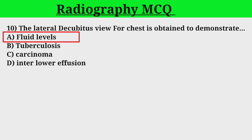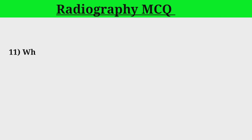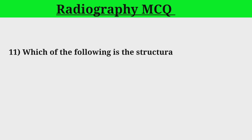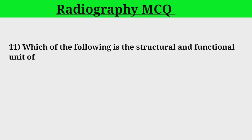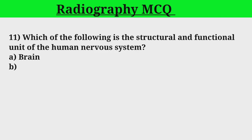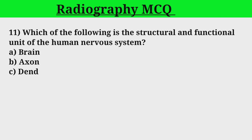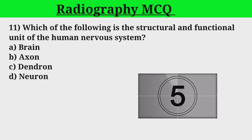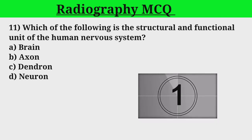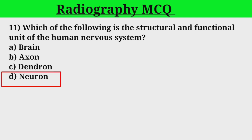Question 11. Which of the following is the structural and functional unit of the human nervous system? A. Brain. B. Axon. C. Dendron. D. Neuron. Correct answer: D.